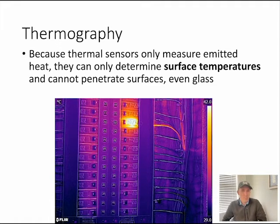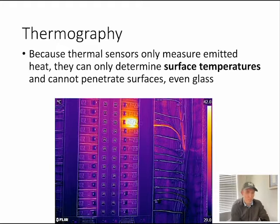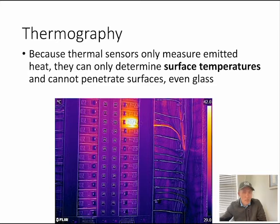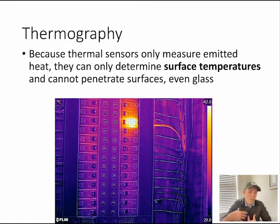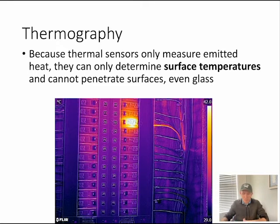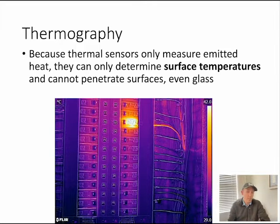One caveat with thermal imagery is that thermal sensors only determine surface temperatures — the emitted heat from a surface. They won't penetrate surfaces; even glass blocks thermal sensors. For example, a human has a core body temperature of around 98°F, but the external temperature at the skin or clothing will likely be lower. So the sensor only sees that cooler outer surface, not the core temperature.